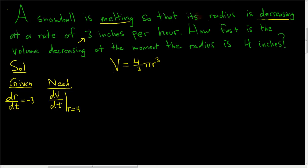We'll take the derivative of both sides of this equation with respect to time. On the left-hand side, we just get dV/dt. On the right-hand side, keep in mind that 4 thirds and pi are constant.